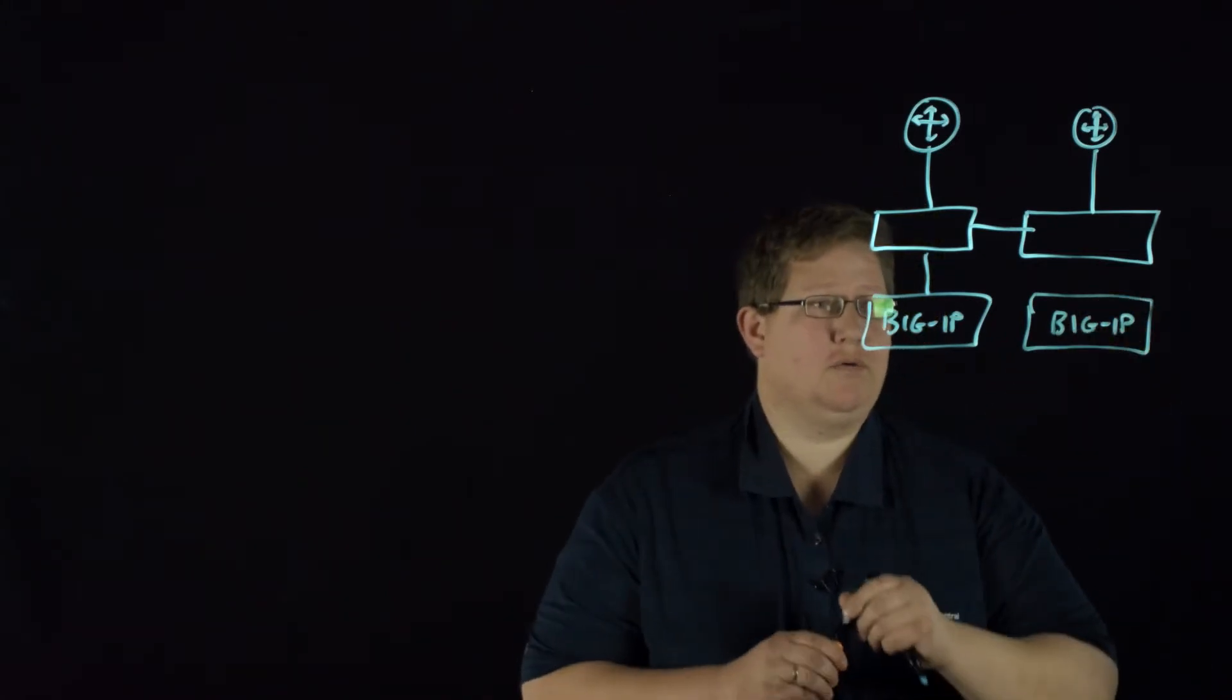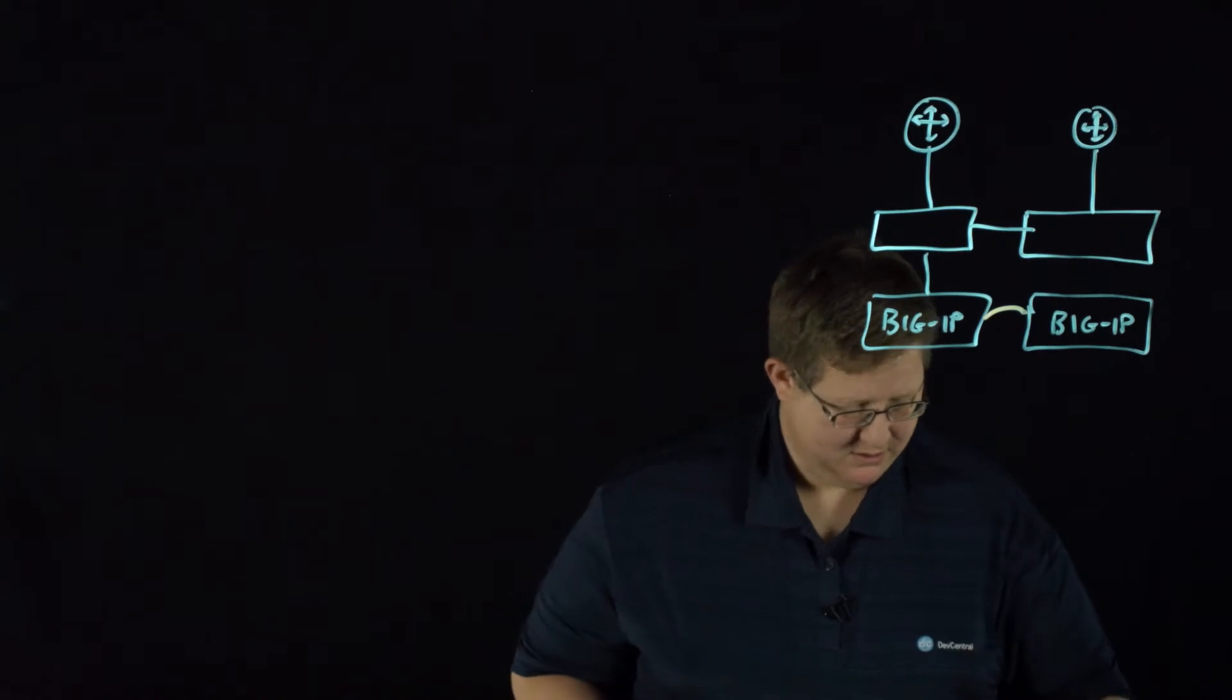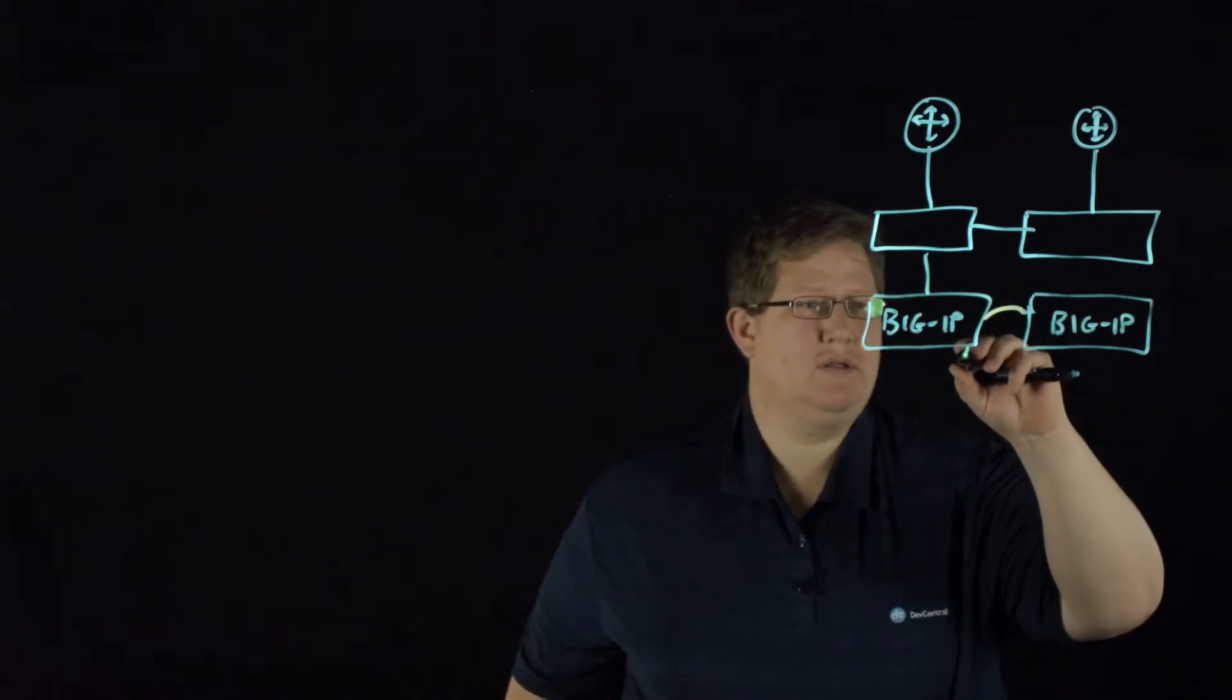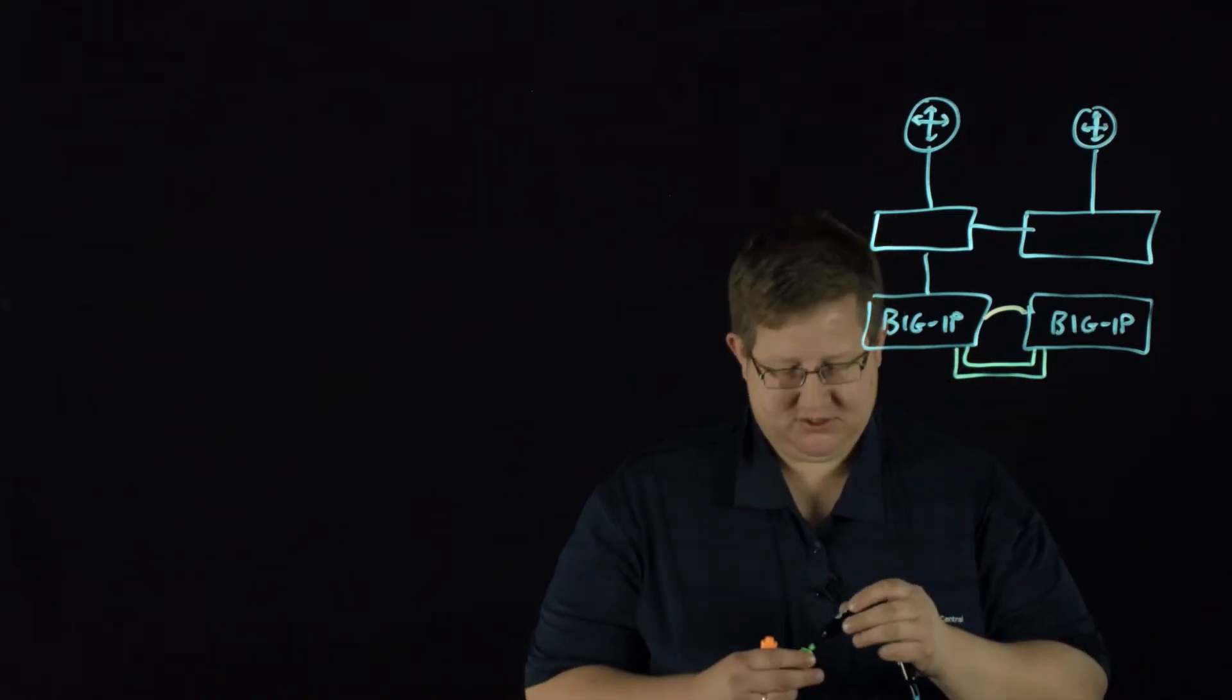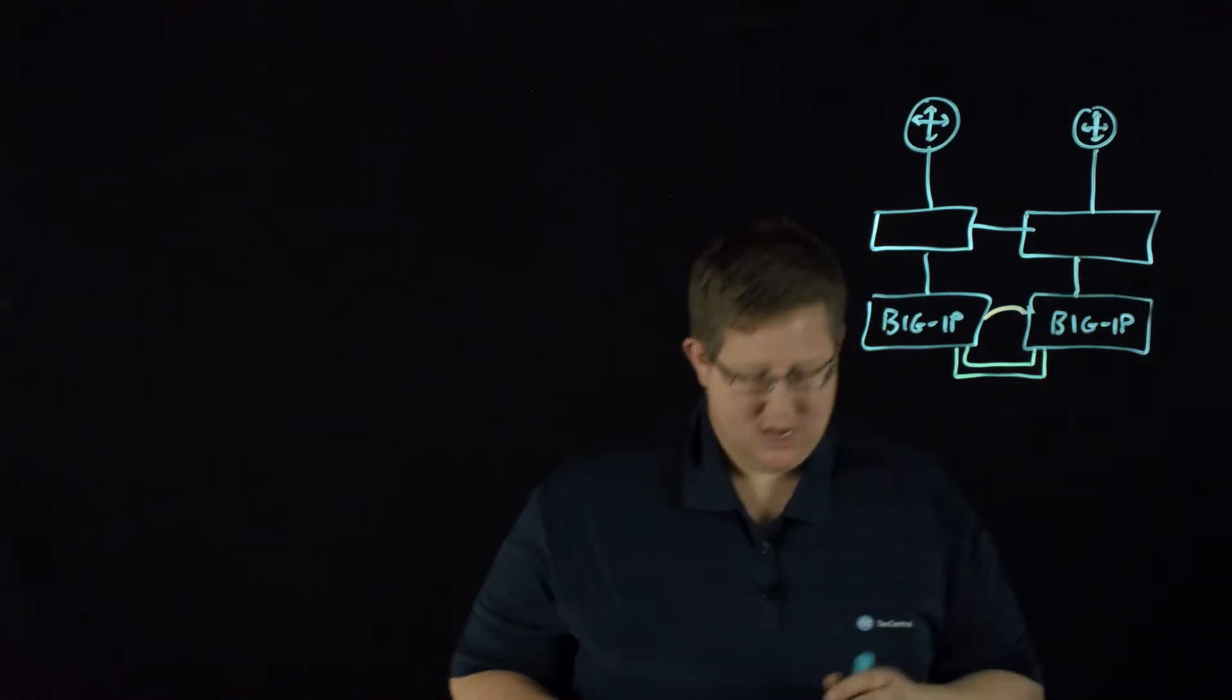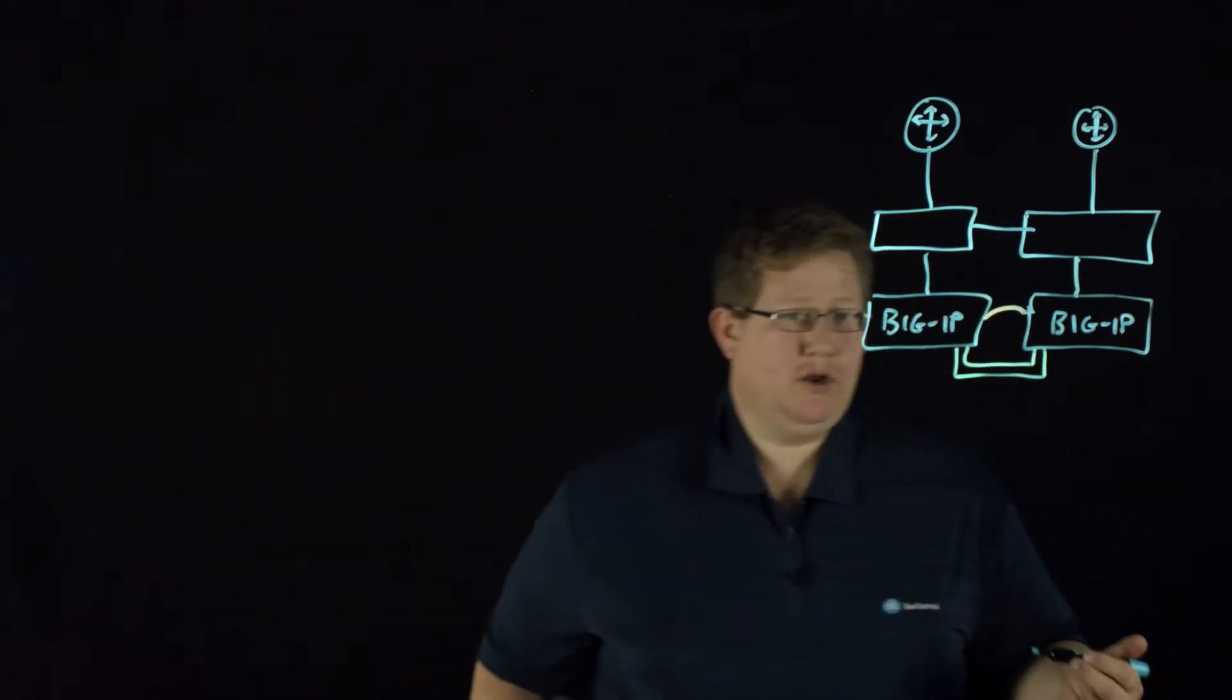Say you have a hardware connection between these BIG-IPs, and that's just a voltage, and then you've got your HA connections on a network as well, but then you're also connected this way via network. You have multiple ways for these to be active standby.